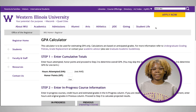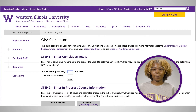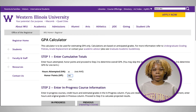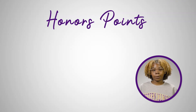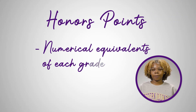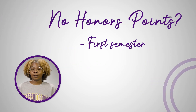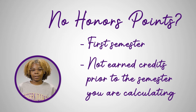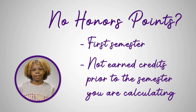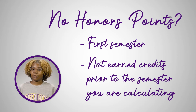Now let's calculate your cumulative GPA. Type in your hours attempted and your honors points if you want to calculate your cumulative GPA. Honors points are numerical equivalents of each grade. If you do not have honors points, it is either your first semester, or you have not earned any credits prior to the semester you are calculating, and there is no cumulative.